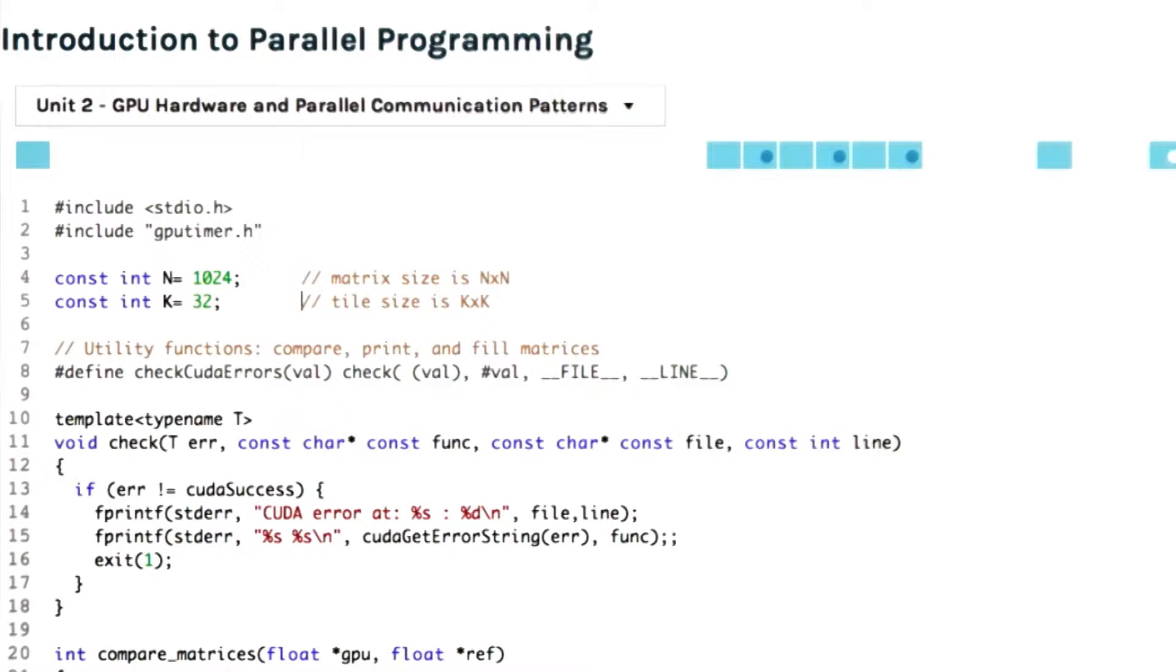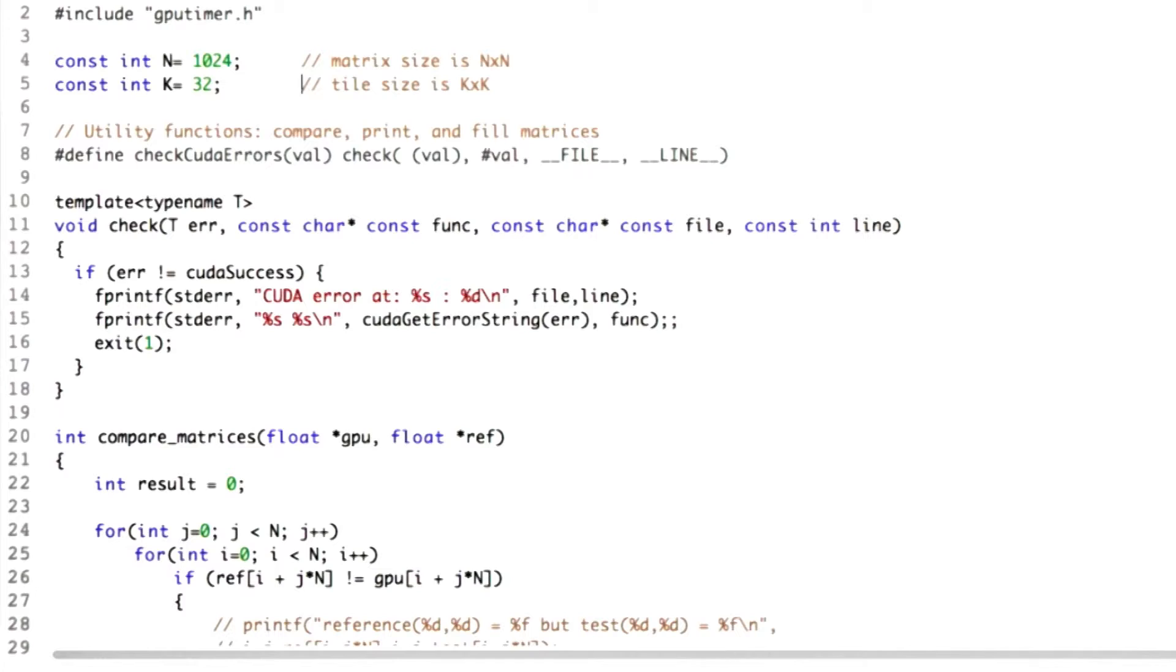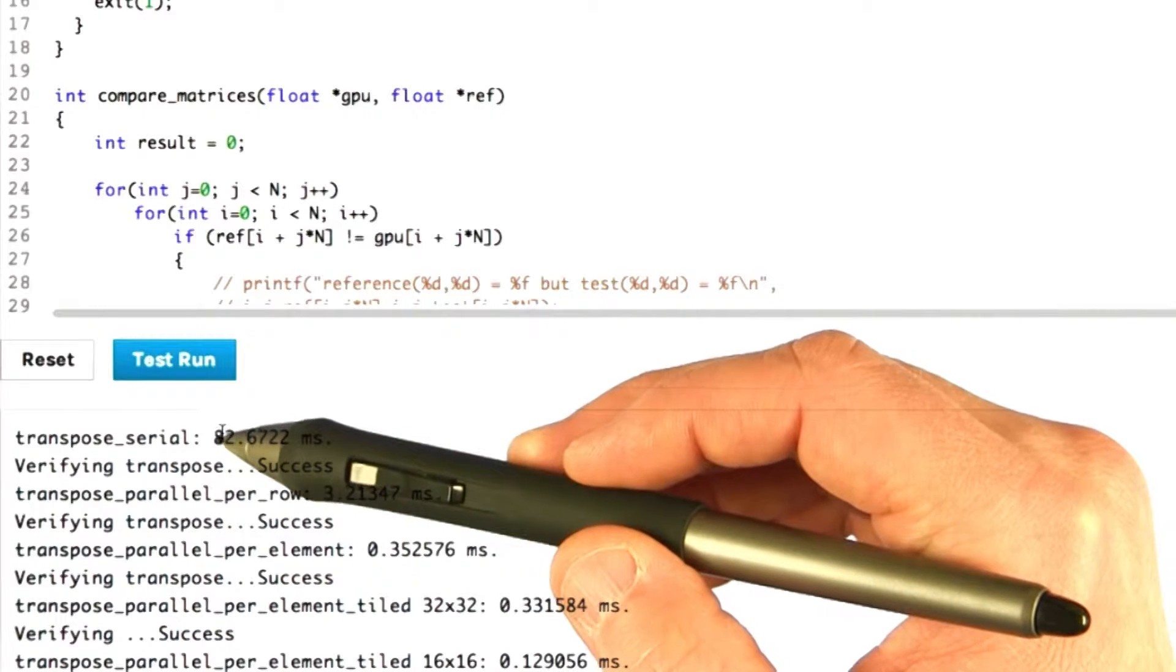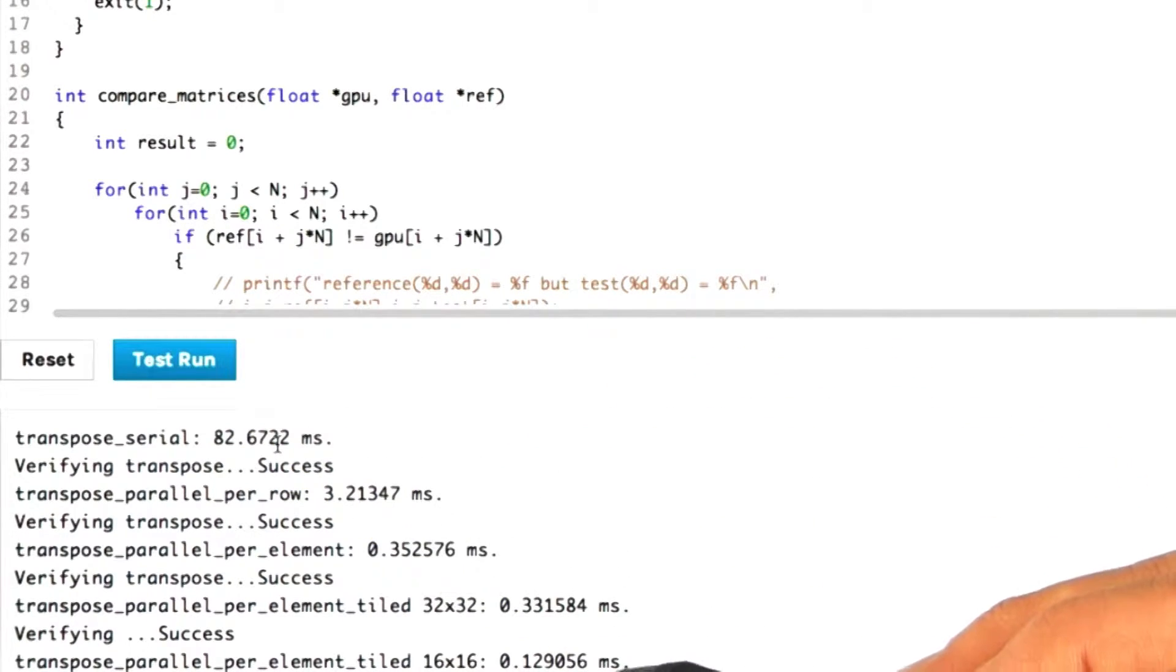Here's the code we've looked at before, this time running in the Udacity IDE. Let me do a test run. You can see that transpose serial took 82.6 milliseconds all the way down to transpose parallel per element tiled, which took about 0.13 milliseconds.